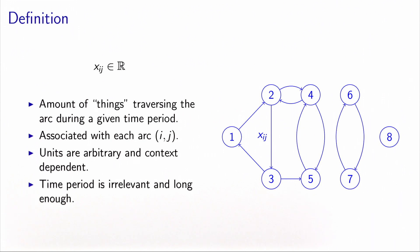The units of these flows are arbitrary and, of course, context-dependent. It can be a number of cars, a number of liters of water in a pipe, and so on. We will assume that the time period here is irrelevant and long enough to allow the flow to reach its destination.